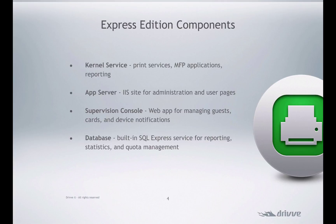There's also a supervision console. The supervision console is used for managing all the guest users and the cards that users have registered, and it's where you can set up device notifications. The supervision console is installed automatically with the Express Edition. However, in a more distributed environment, the supervision console is used to report on the status of different print servers. So if you've got 10 different print servers across a network, they would all work with a central supervision console so you could keep a status of all the different printers and print servers across the network.